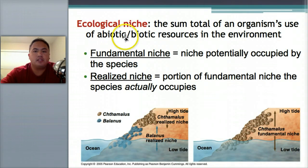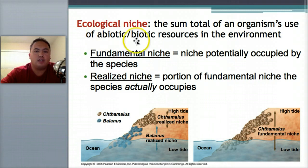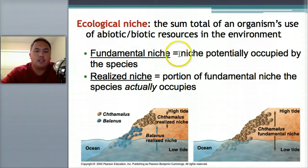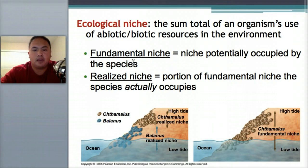An ecological niche means the sum total of an organism's use of abiotic and biotic resources in the environment. Abiotic means non-living and biotic means living resources. A fundamental niche is the niche potentially occupied by the species, and the realized niche is the one it actually occupies.